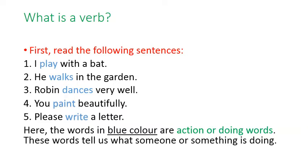Remember? These words tell us what someone or something is doing. I play with a bat — someone is playing, so that is the action. He walks in the garden — someone is walking, that is the action. So we call these action words or doing words.